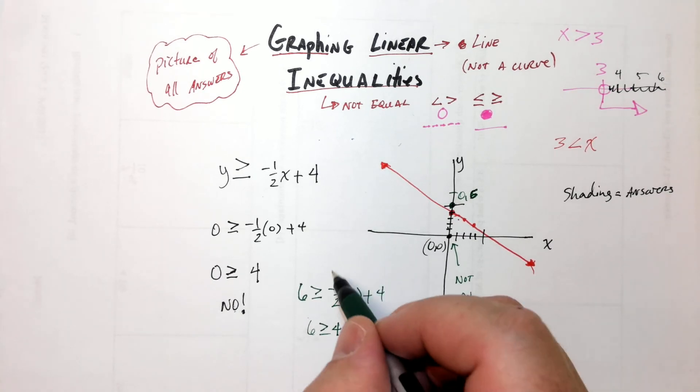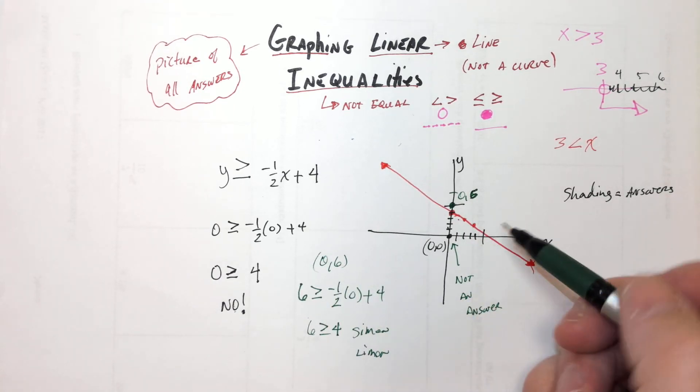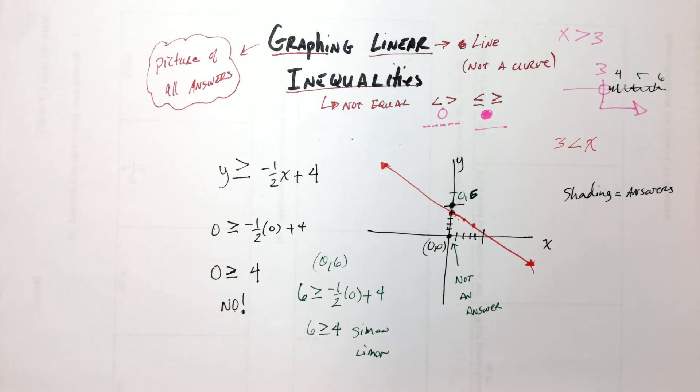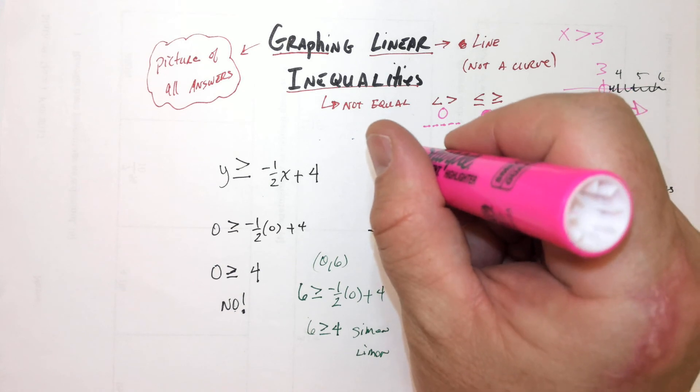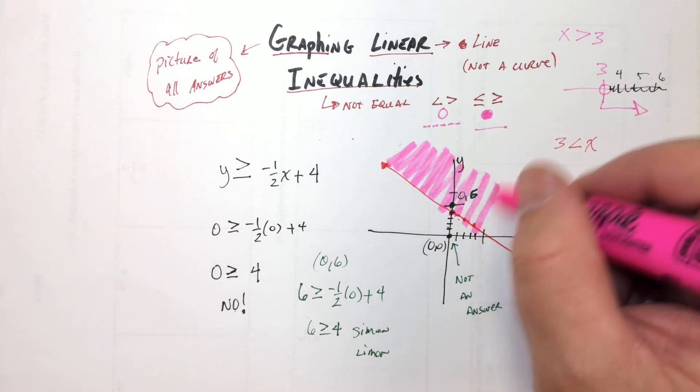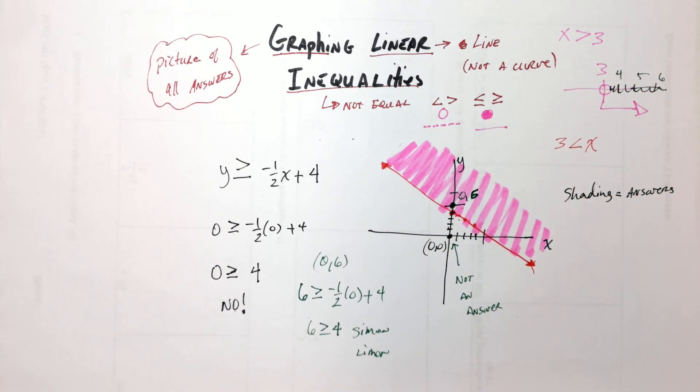No, we just shade. So zero, six is an answer. Everything above is an answer. Everything below is not an answer. So we're going to shade it above. I'm going to use a fancy highlighter, because I got one. That means everything above that line is an answer. And everything below the line is not an answer.